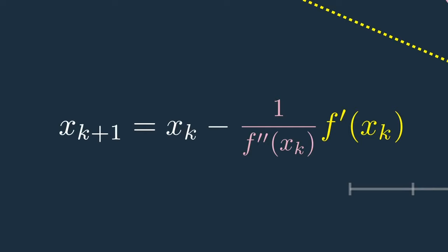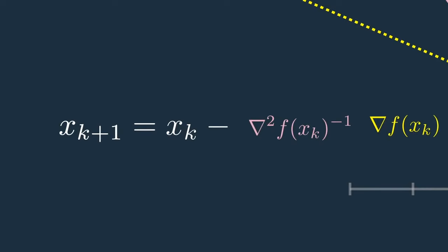Note that we do not need to pick the step size alpha manually anymore. When you work out all the details, you realize this generalizes to multivariate functions in exactly the way you would expect: simply replace the first derivative with the gradient, and replace 1 over the second derivative by the inverse of the Hessian, which is a matrix.